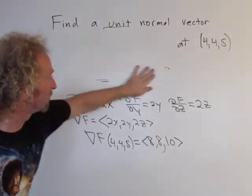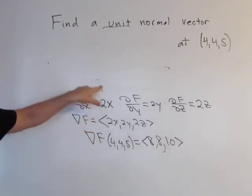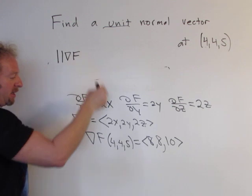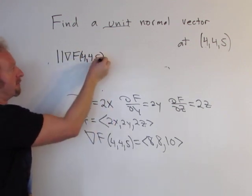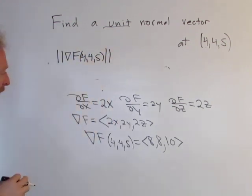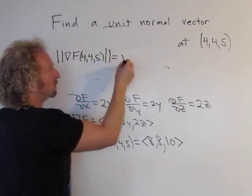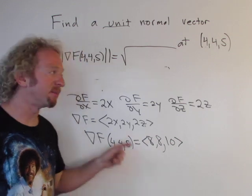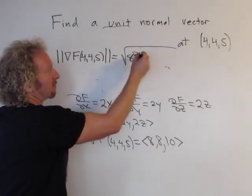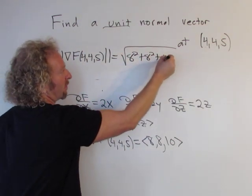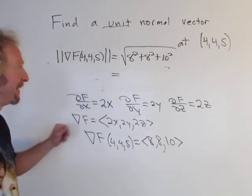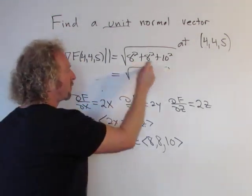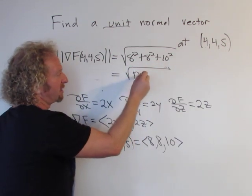Let's find the magnitude of the gradient vector. The magnitude of the gradient at (4,4,5), that's going to be equal to—what you do is you take the square root and you square the components and add them, so it would be 8 squared plus 8 squared plus 10 squared. So this is 64 plus 64 plus 100. 64 plus 64 is 128, and then 10 squared is 100, so 100.